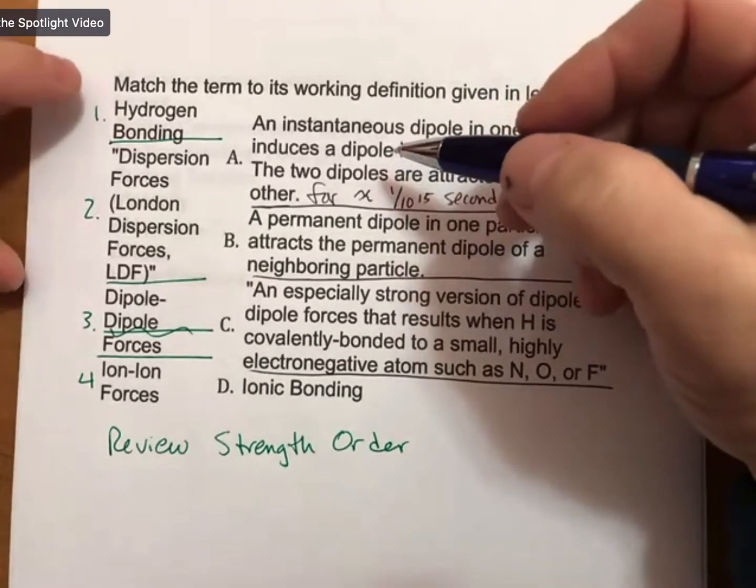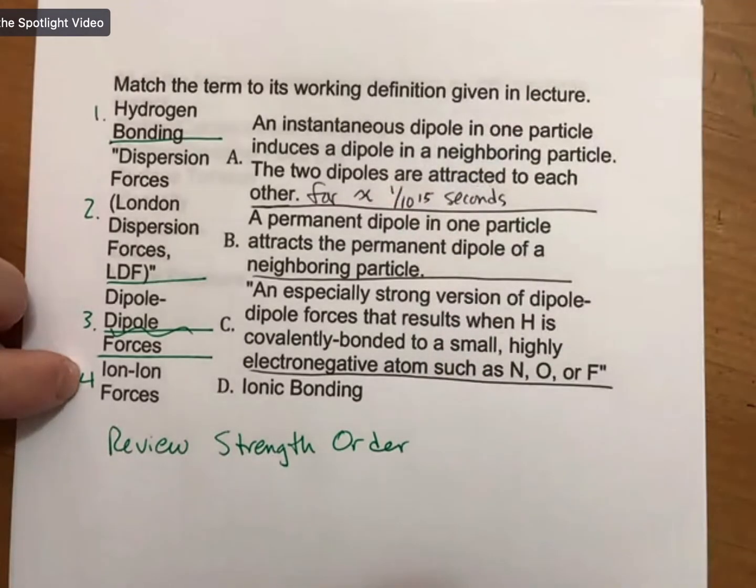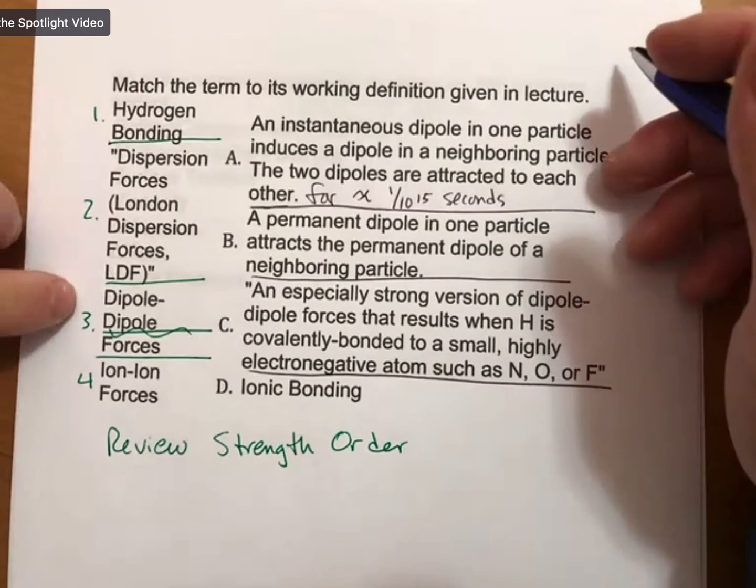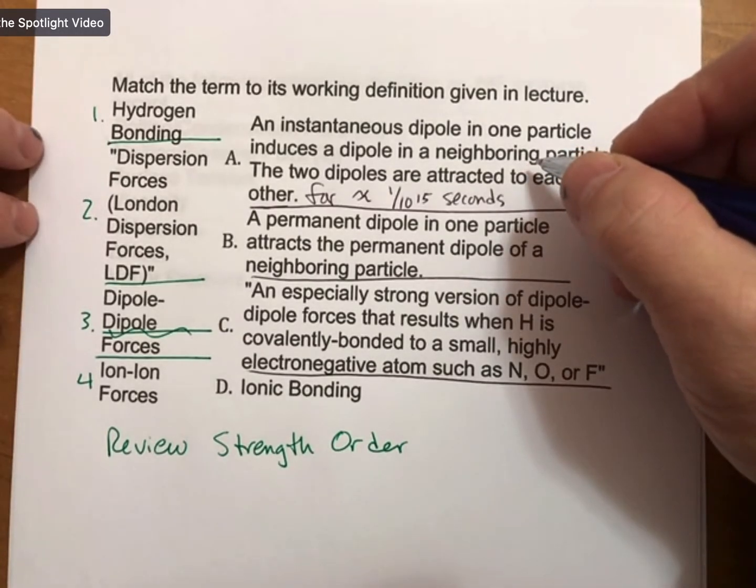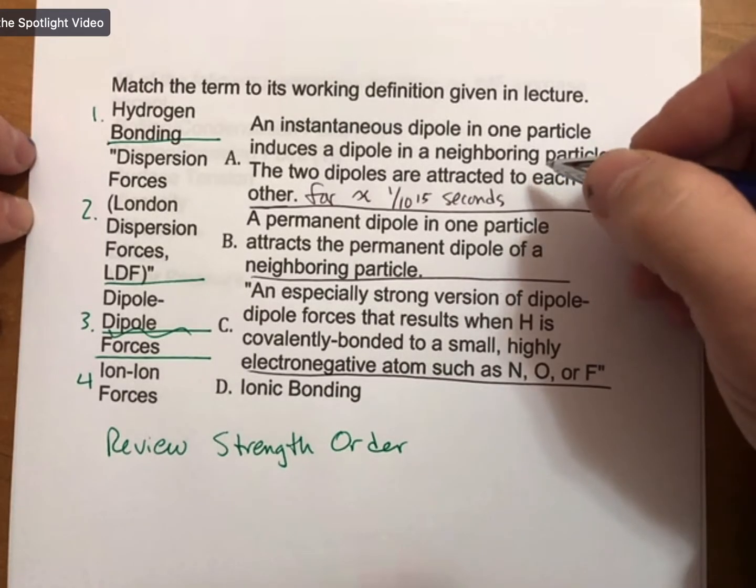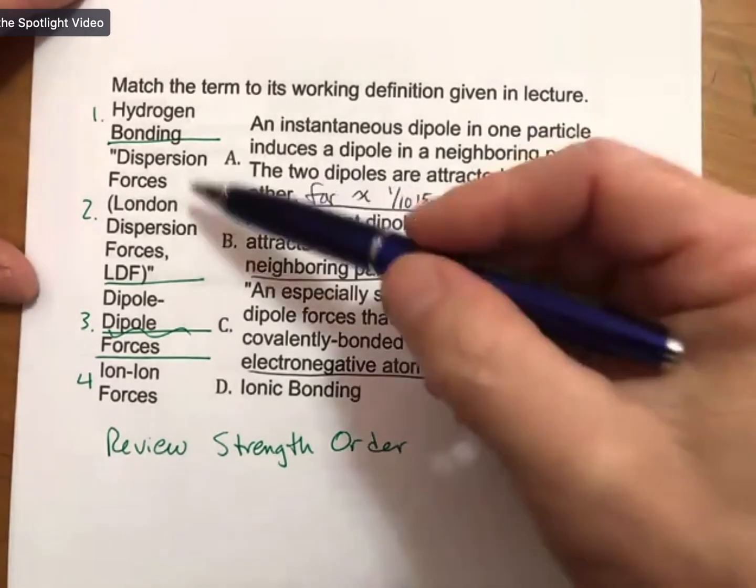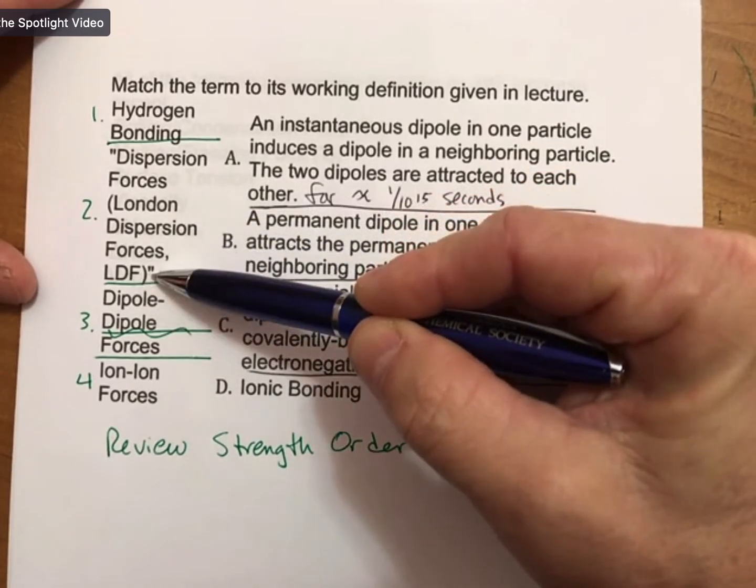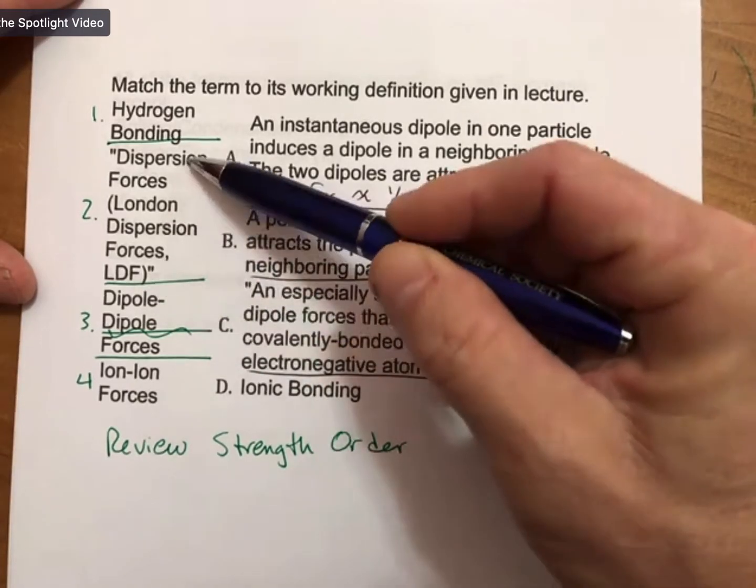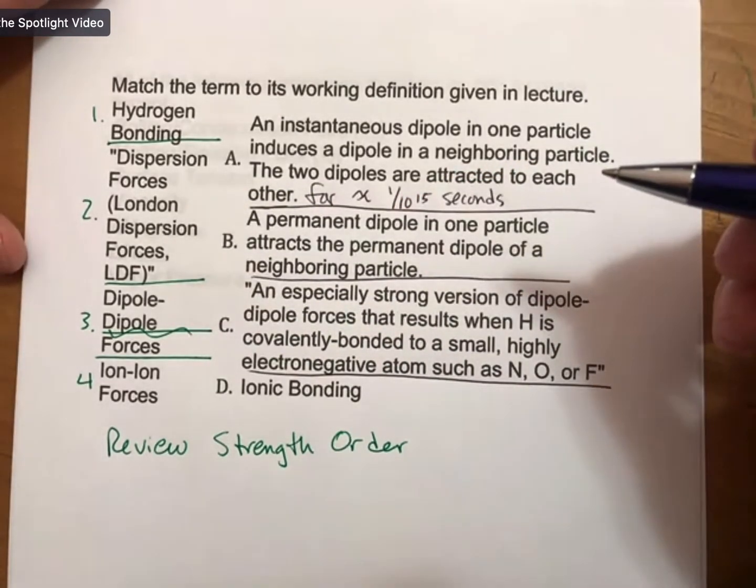For definition A, I've got number one, two, three, and four over here. Can anybody tell me one, two, three, or four, or by name which one is A? London Dispersion Forces. Thank you Selden, yes. Dispersion Forces is one name for them, London Dispersion Forces is another name. LDF is an abbreviation. I will take any of these answers.